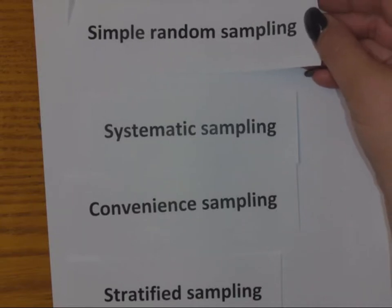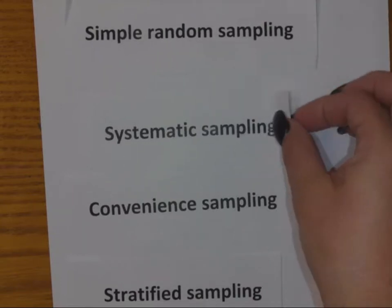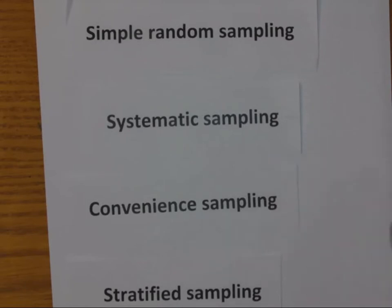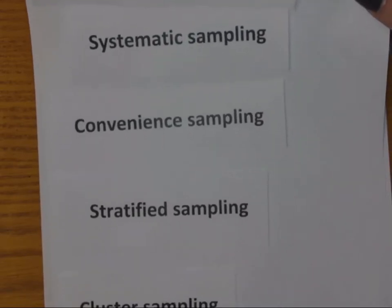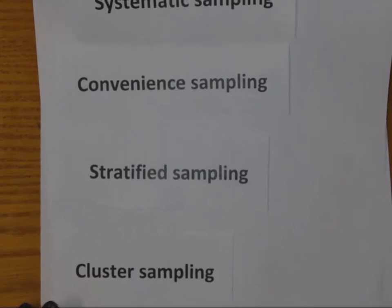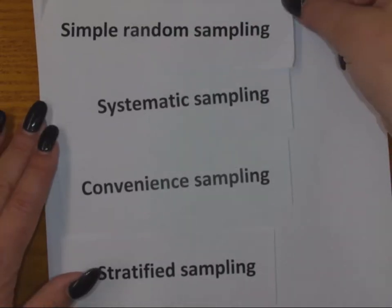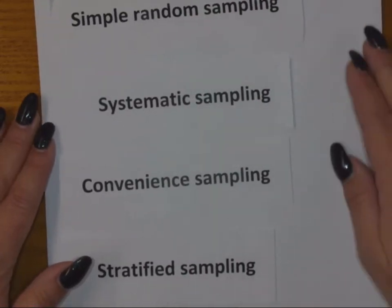Simple random sampling here's one, systematic sampling, convenience sampling, stratified sampling, and down here at the bottom I have cluster sampling. So those are the five sampling types that we're talking about in this class.